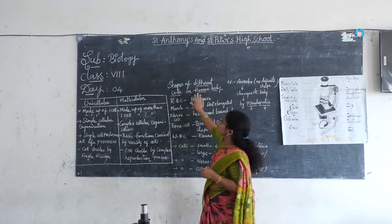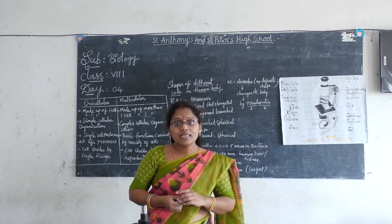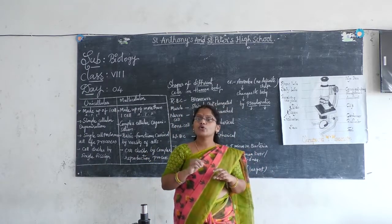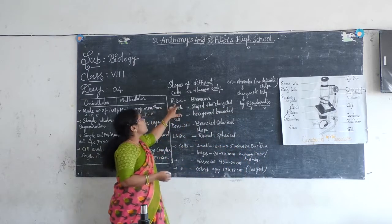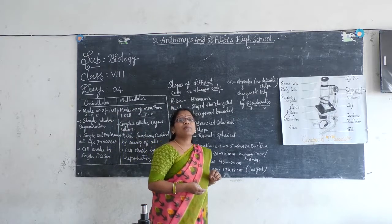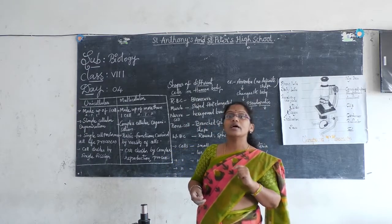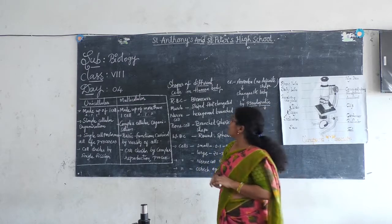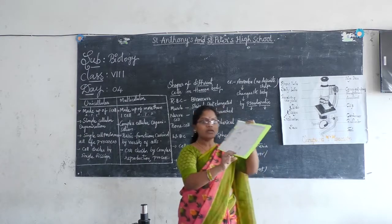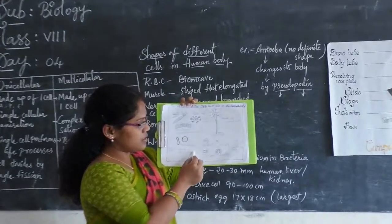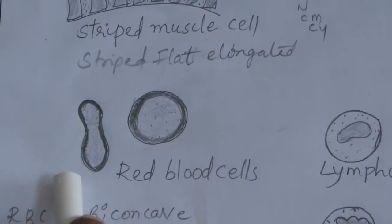Now, coming to the shape of the cells in the human body — if you are eager to know what different types of shapes are present. I am going to show you some shapes. First is RBC. What is RBC? Red blood corpuscles, also called red blood cells. RBC is biconcave in shape. This part here is called RBC — red blood cells. They are biconcave in shape.